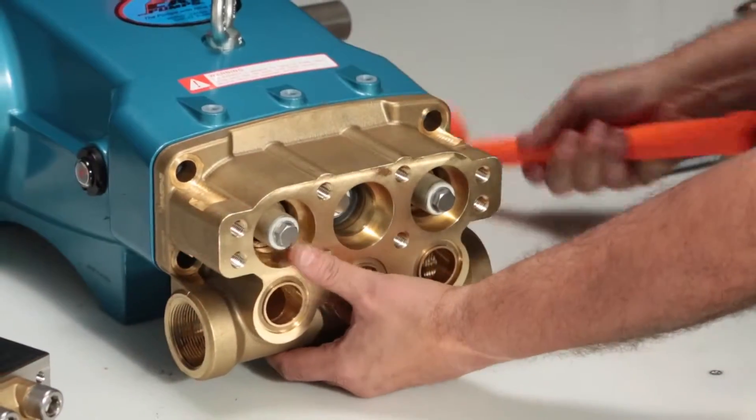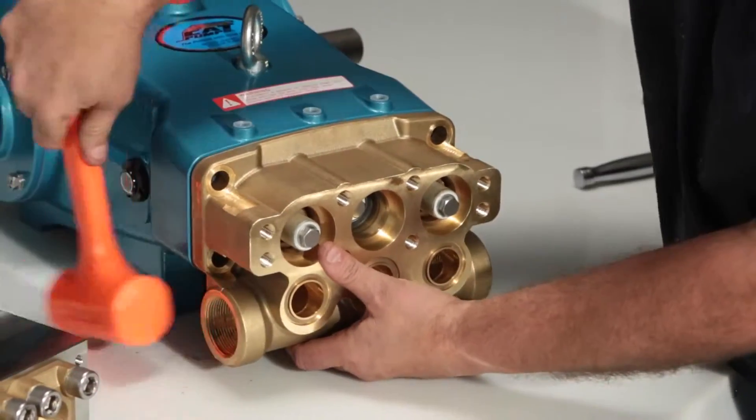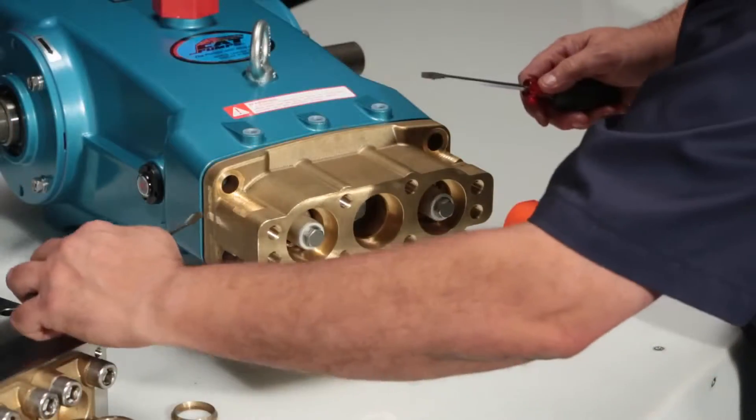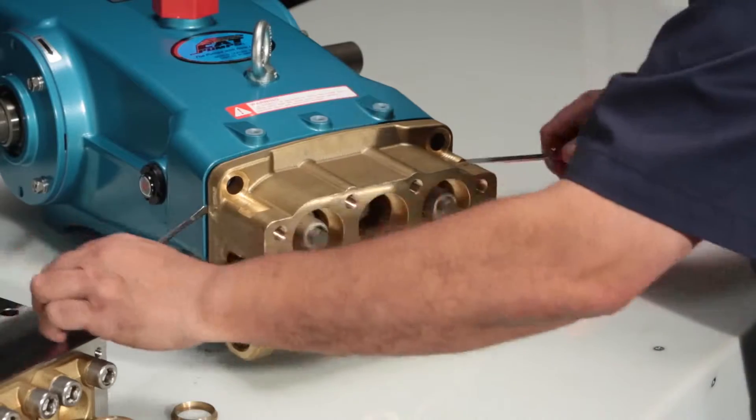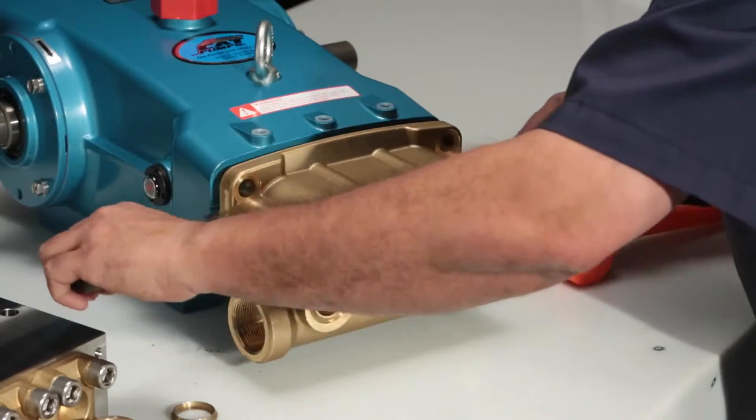Using a rubber hammer, tap away from the drive end to create separation. Then, using two screwdrivers, work from each side between the manifold and crankcase and remove.